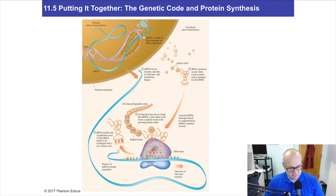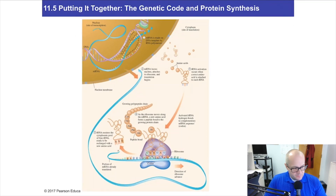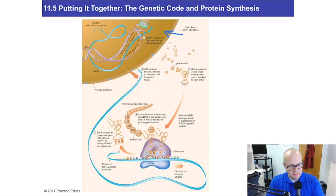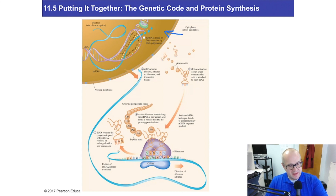This is complicated stuff, but we're going to make it as easy as we can. Let's look at the schematic. We're going to go through the whole process again. Inside of the nucleus, we have DNA unwinding. A gene of DNA, which is just a sequence of nucleotides, is unwinding a little bit. RNA polymerase, working with nucleotides, builds messenger RNA as a complementary base pairing strand from DNA.